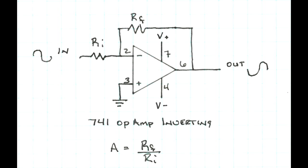This is the schematic of the inverting amplifier using a 741 op amp. The pins indicated are for the 8 pin dip package.